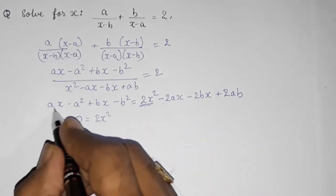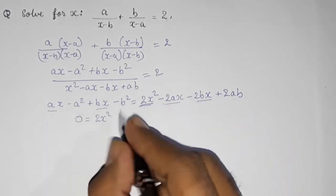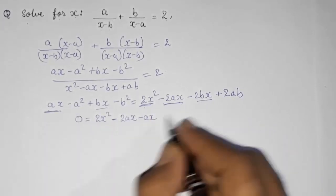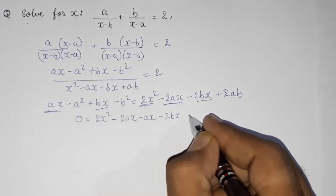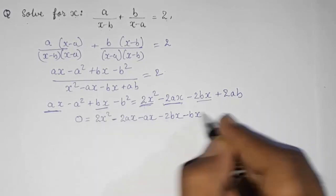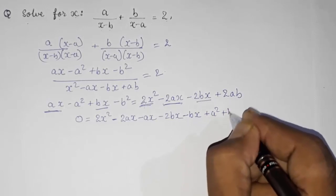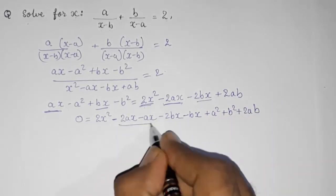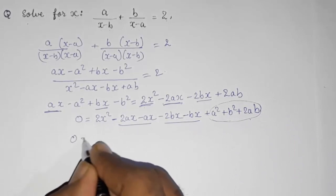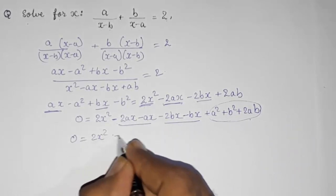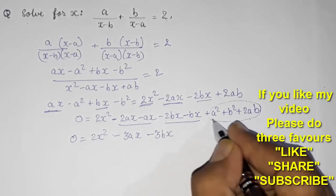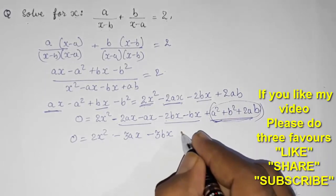Collecting terms by x squared, x, and constants: 2x squared, then x terms: minus 2ax minus ax gives minus 3ax, and minus 2bx minus bx gives minus 3bx. The constant terms: a squared plus b squared plus 2ab, which we recognize as the identity (a plus b) whole squared.